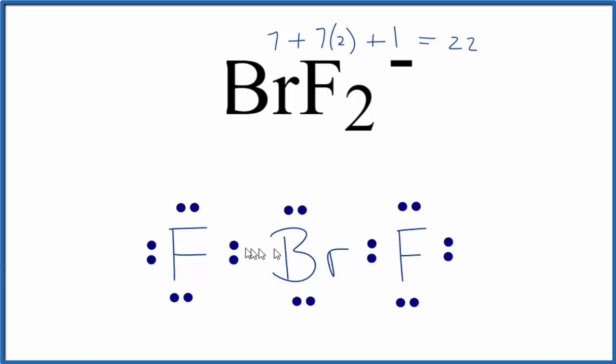When we have bromine here, it can actually have what's called an expanded octet. So we can put these extra electrons here on the bromine atom, and it now has 2, 4, 6, 8, 10, but that's okay. It has an expanded octet.